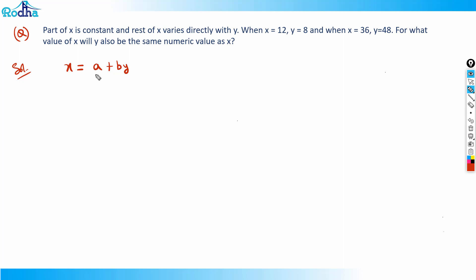So the equation is: x equals a plus b·y. The constant part 'a' is fixed, and the other part varies directly with y. Now I can solve these two equations to get the values of a and b.